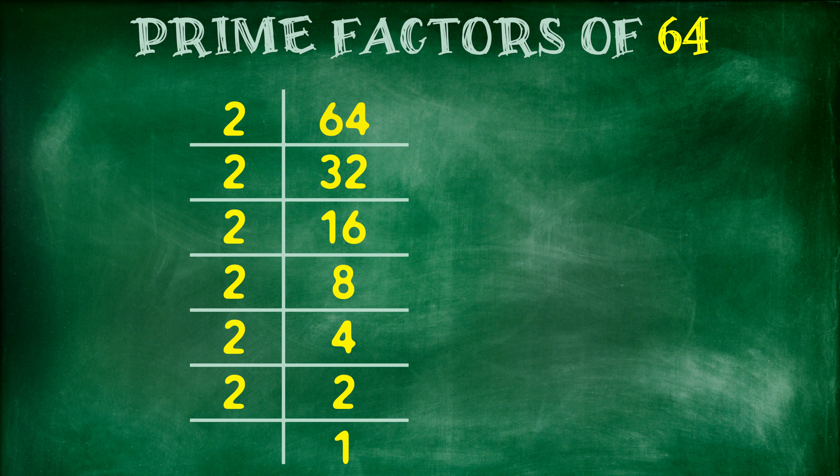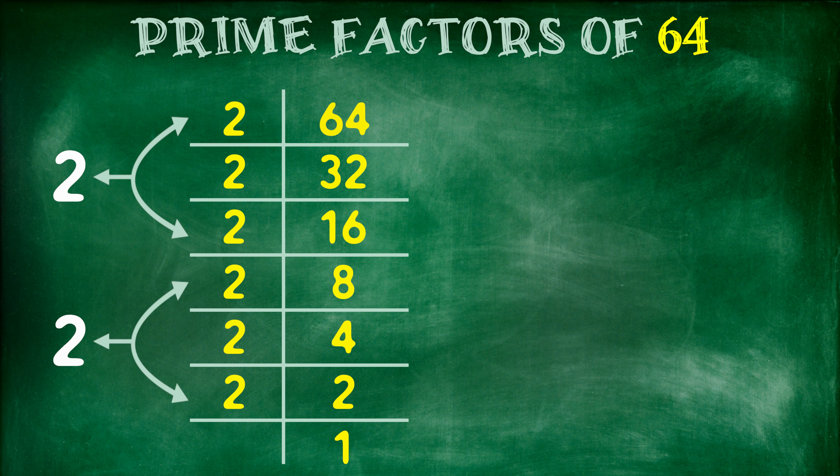Now make pairs of identical factors. Take one factor from each pair and multiply them.